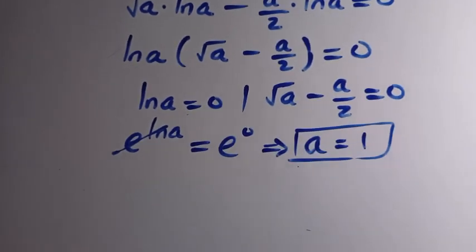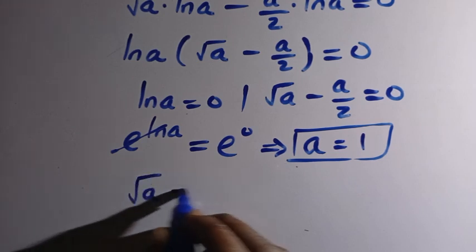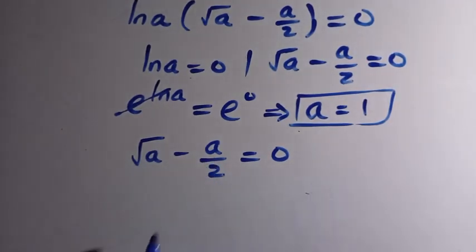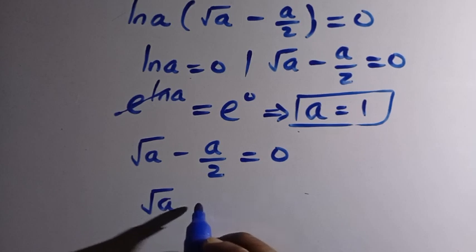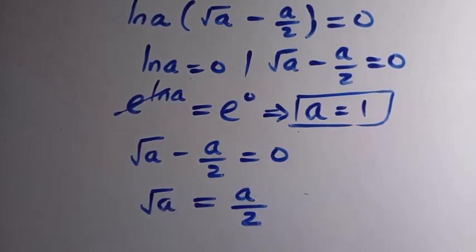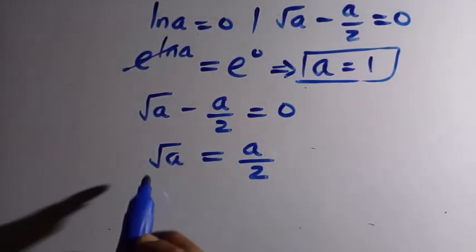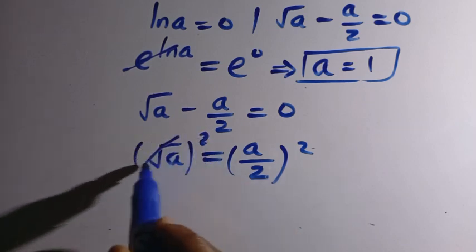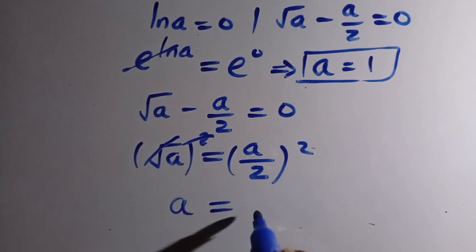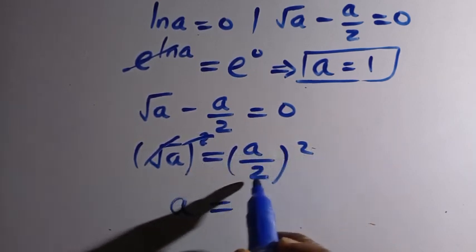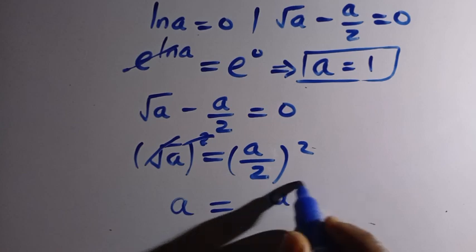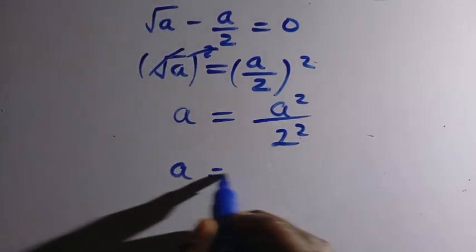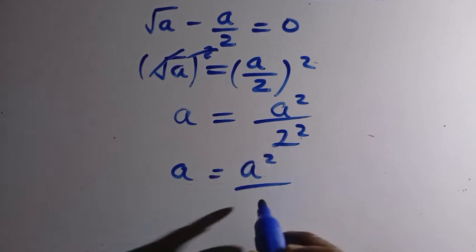To get the other values, we consider square root of a minus a divided by 2 equals 0. Transferring a over 2 to the other side gives root a equals a divided by 2. Taking the square of both sides, the square root and square cancel on the left, while the right becomes a squared divided by 2 squared, that is a squared divided by 4.